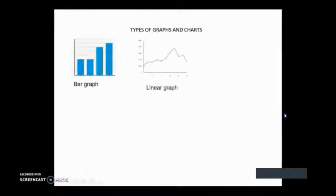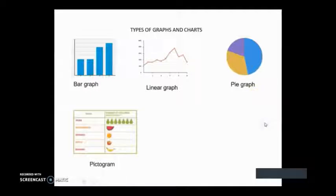To illustrate the types of graphs and charts: We have the bar graph. It looks like this. A linear graph or line graph. A pie graph in circular form. Pictogram with some pictures in it.